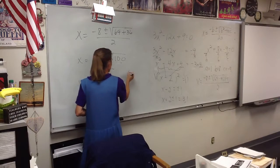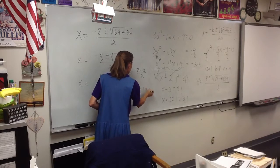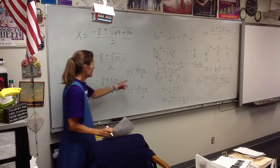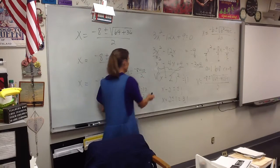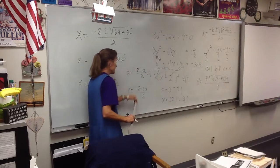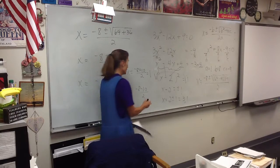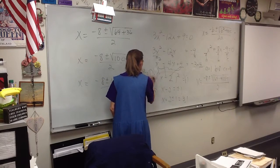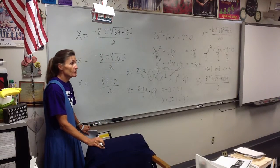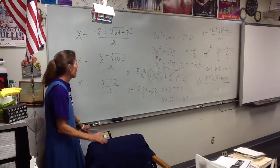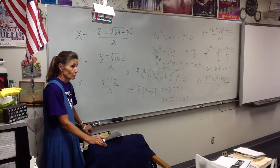So we have our two answers. Negative 8 plus 10 over 2, and negative 8 minus 10 over 2. Well what do those work out to be? Negative 8 plus 10 is 2 divided by 2 is 1. Negative 8 minus 10 is negative 18 divided by 2 is negative 9. Just like when you complete the square, we get two answers. And that happens because of that plus or minus in there. Everybody good?